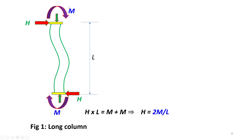This long column of length L is subjected to moment M at the top and moment M at the bottom — both taken as equal for convenience — and a lateral thrust H at the top with the same value at the bottom as counterbalance. Taking moments of all forces about the base: H × L = M + M, which gives H = 2M / L. This is the shear produced in the long column due to the end moments.